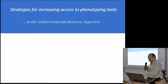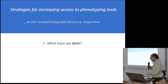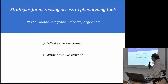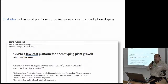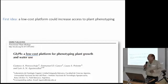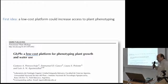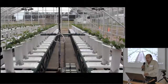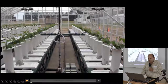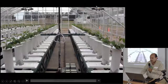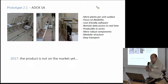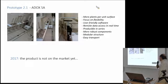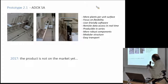Thanks, Gustavo. What I will tell you is what we have done, mainly what we have learned, and what we plan to do. As Gustavo told you, our first idea was that a low-cost platform was necessary to increase access to plant phenotyping. So we built it. This is the Glyph platform, and now we have a prototype which has been largely improved. The first prototype was built in 2011.